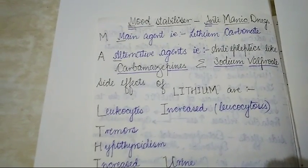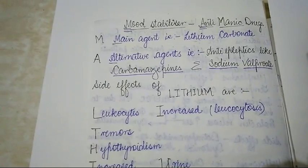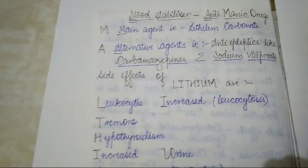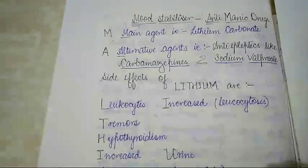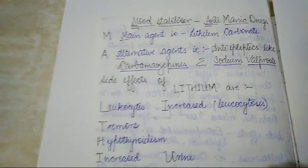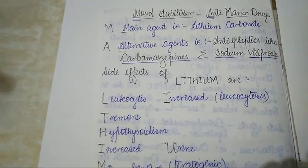Now let's have a short review of the side effects of these mood stabilizers or anti-manic drugs. The main drug used as an anti-manic drug is lithium carbonate. Looking at the adverse effects of lithium, they can be classified and looked upon.